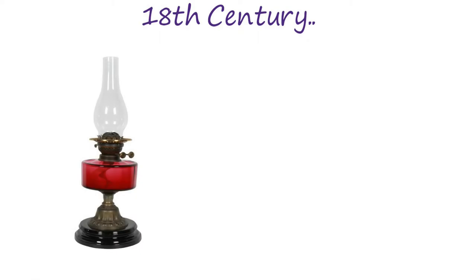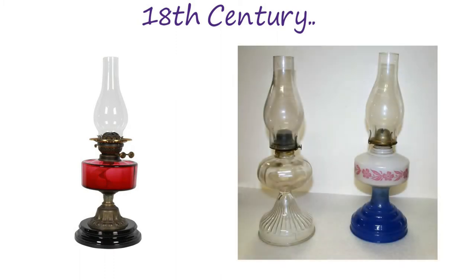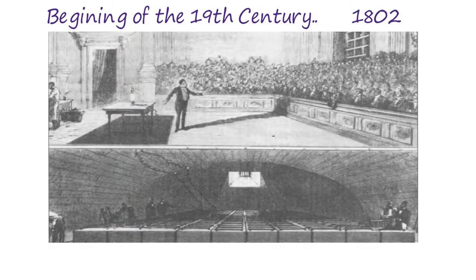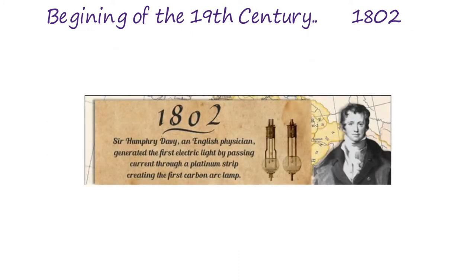Then comes one of the greatest inventions of human history: the electric lamp. At the beginning of the 19th century, the first electric light was created by Englishman Humphrey Davy. He demonstrated the first incandescent light to the Royal Institute in Great Britain using a bank of batteries and two charcoal rods. His invention was what we commonly refer to as an arc light, modern-day versions of which are still being used today.